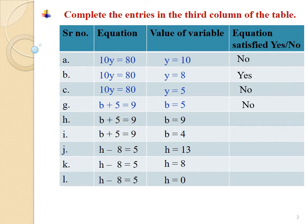Thus, B equals 5 is not the solution of B plus 5 equals 9. Sum H: B plus 5 equals 9, where B equals 9. Let us write 9 in place of B and check whether LHS equals RHS or not. Writing 9 in place of B, we get 9 plus 5. Adding 5 to 9, we get 14. Since 14 is not equal to 9, the answer is NO.